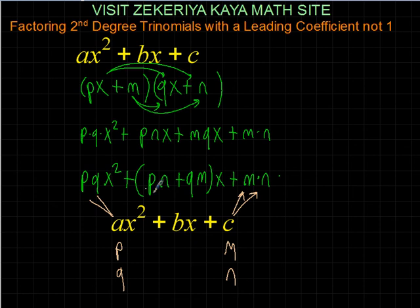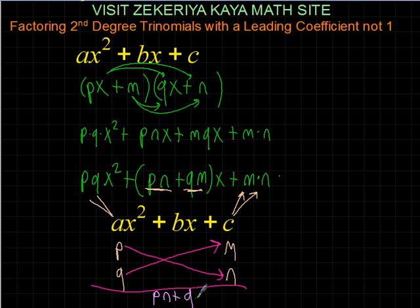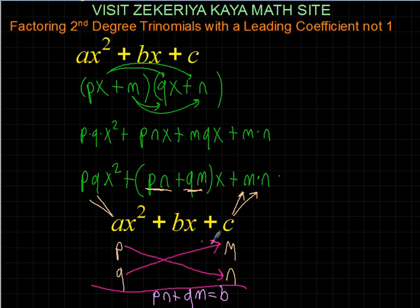The important part is the middle term. What happens in the middle part: I have P times N plus Q times M. So in this order, it will be a cross product — P times N, Q times M. What I want you to realize is that P times N plus Q times M must equal B. So we find two numbers whose product makes C, and two numbers whose product makes A, and when we cross-multiply and add them we need to get the middle term B.